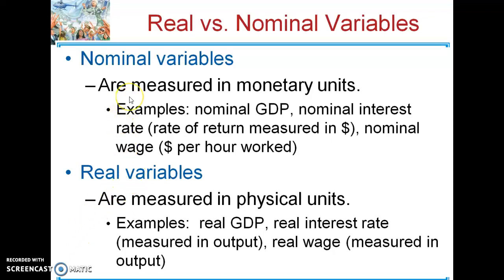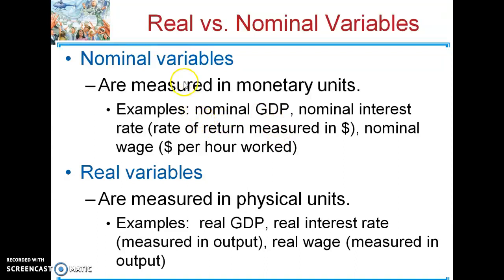Setting up how money creation impacts your economy in the long run: money creation will change anything that is measured in dollars — nominal variables. So nominal GDP, nominal interest rate, nominal wage — anything measured in dollars will be affected by printing money. If you printed enough money, you could make it so that every single price would have an extra zero on it. Prices go up so much that something that used to be $10 now becomes $100. You could change any price in the economy by just printing money or changing the money supply.